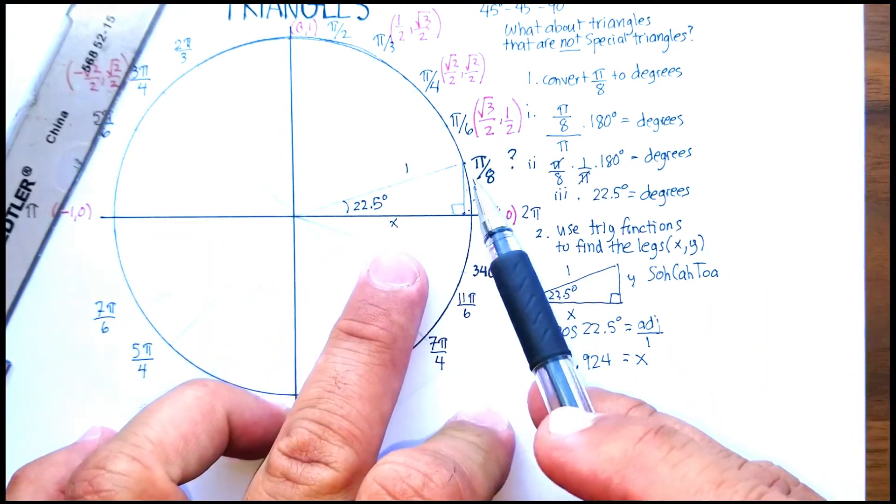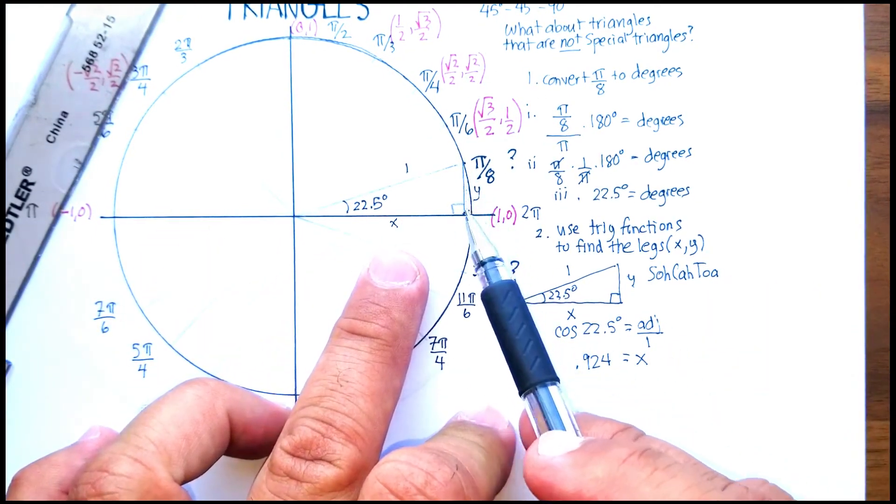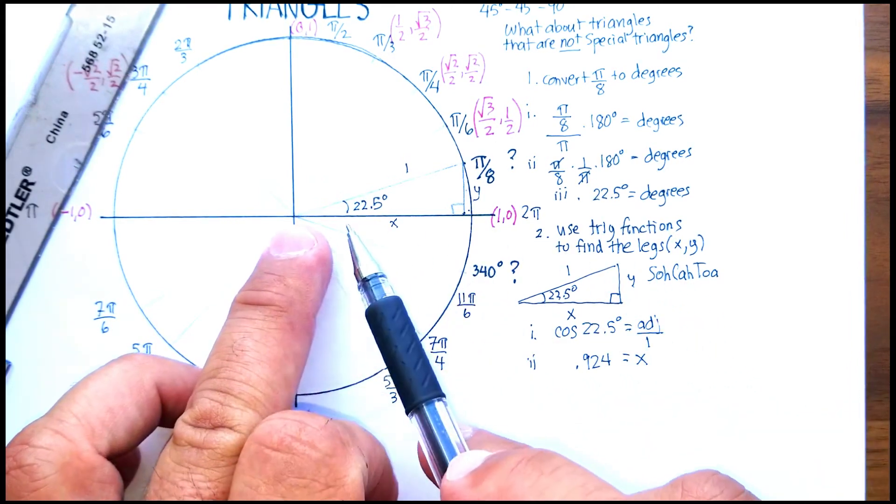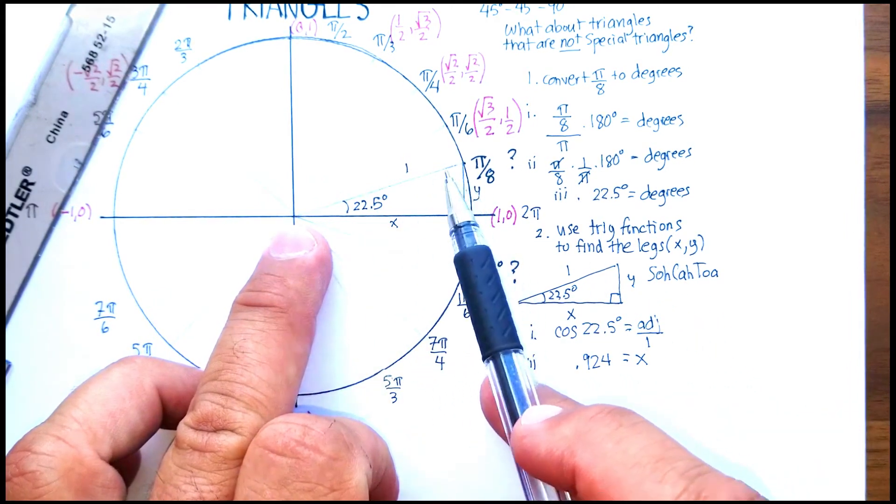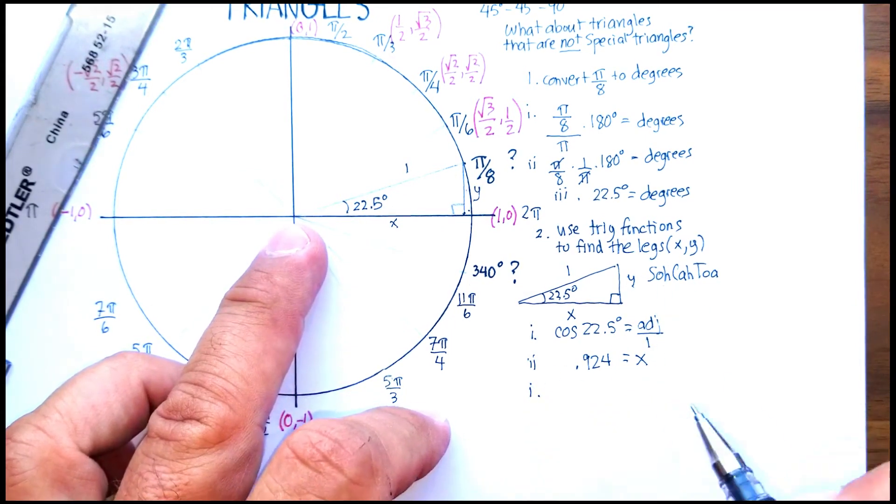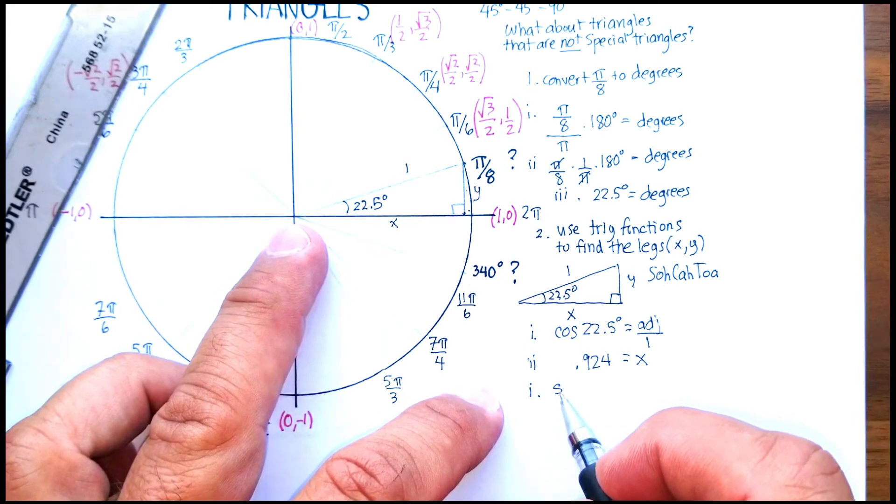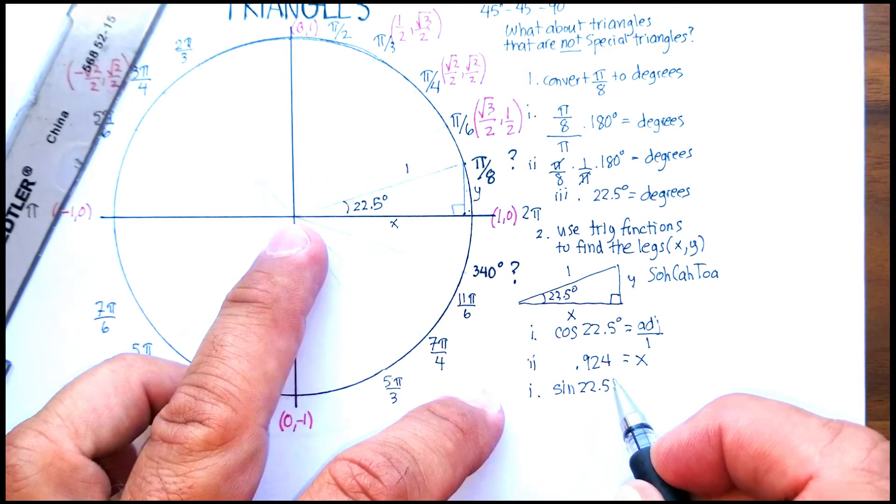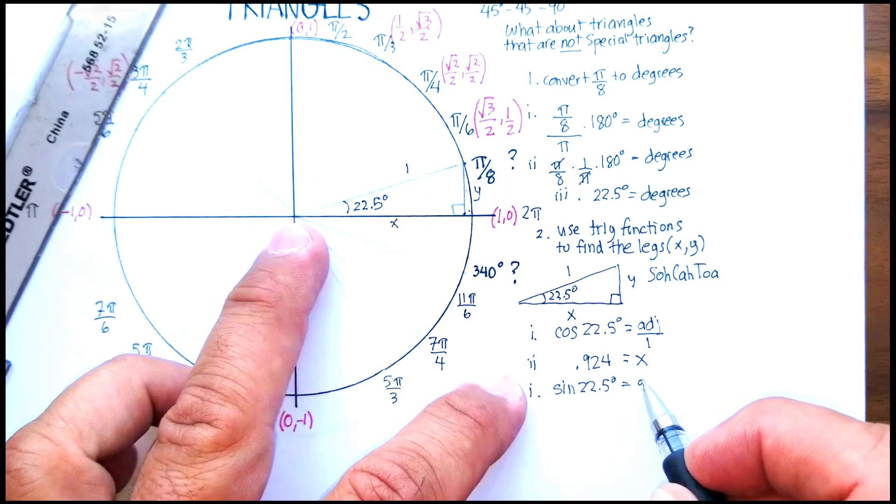Now let's go ahead and find our y value. Which of these three are we going to use? We could find the opposite over the hypotenuse, which would be the sine. So let's do that. We're going to say the sine of 22.5° is going to be equal to the opposite over the hypotenuse.